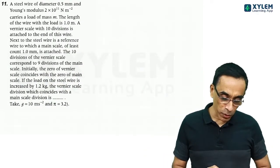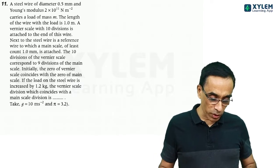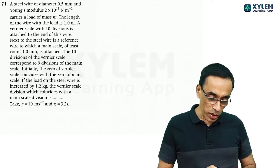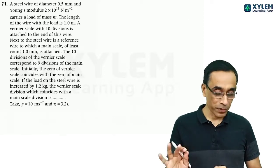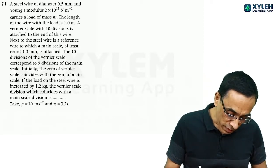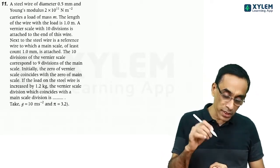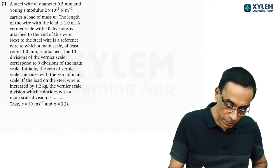A steel wire of diameter 0.5 millimeter and Young's modulus 2 into 10 raised to 11 Newton per meter square carries the load of mass m. The length of the wire with the load is 1 meter with a mass m on it.